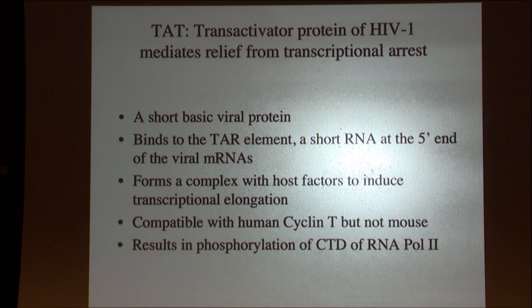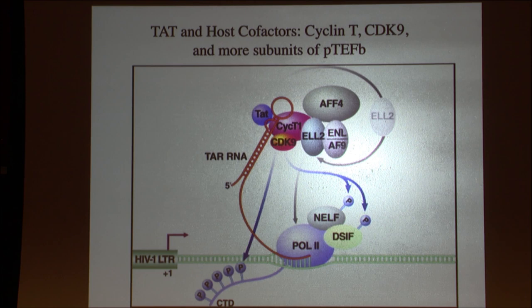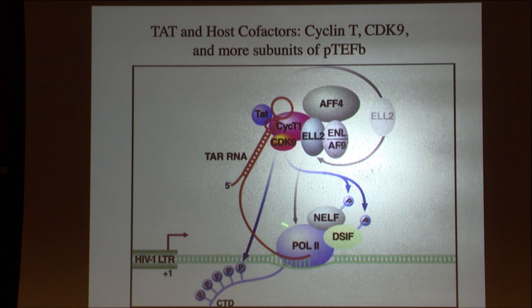TAT binds to the well-defined TAR element — right at the cap, the five-prime end of HIV — a hairpin-like structure that is the site of binding. It brings with it a huge complex of cellular proteins that actually do the work, allowing RNA Pol II to release and go all the way down the rest of the genome.